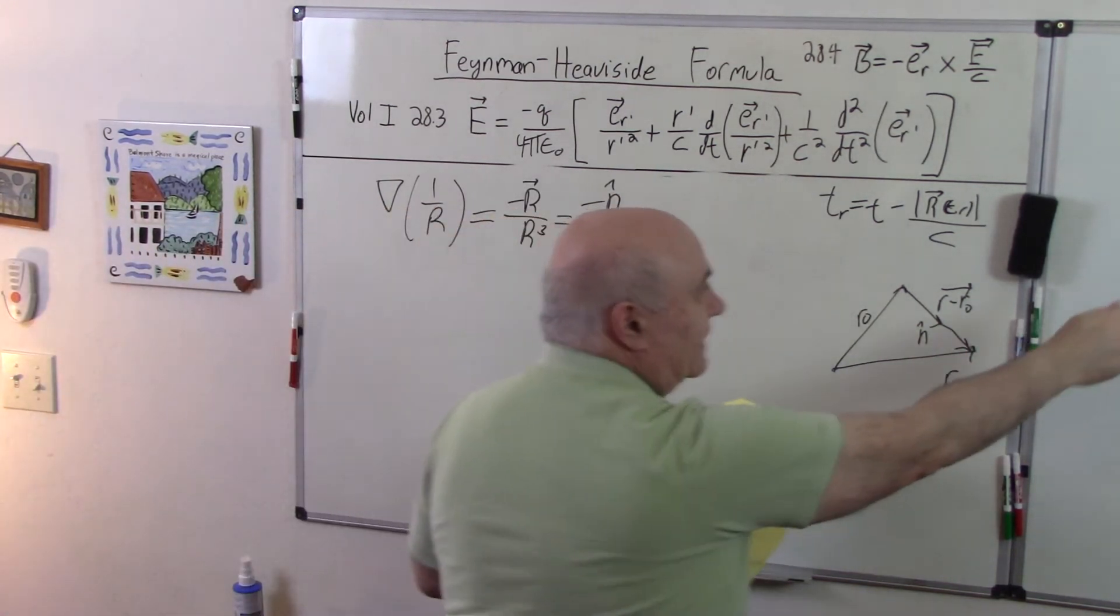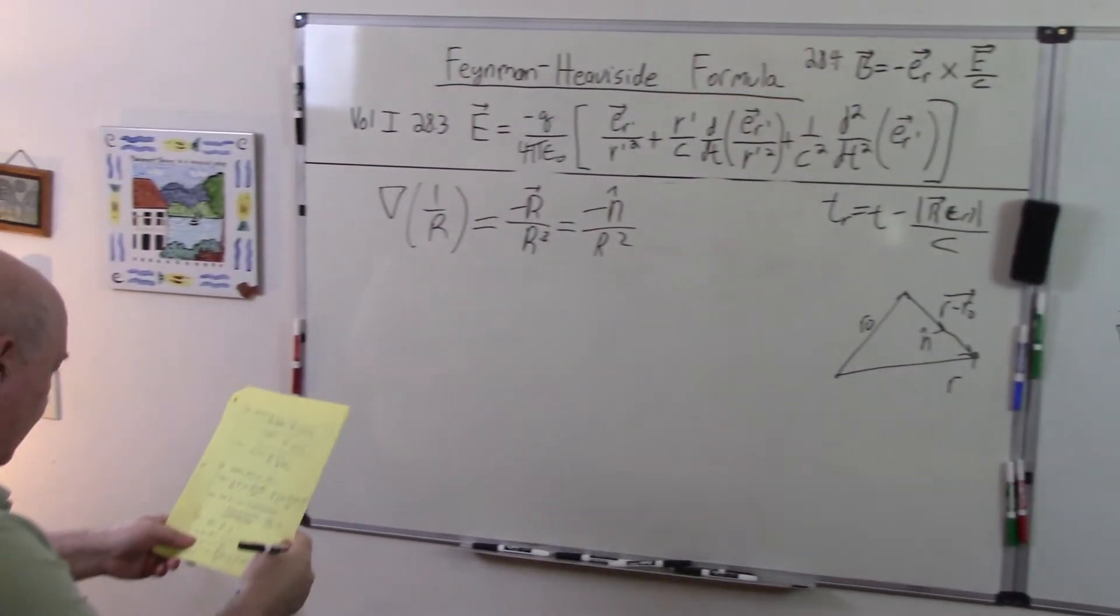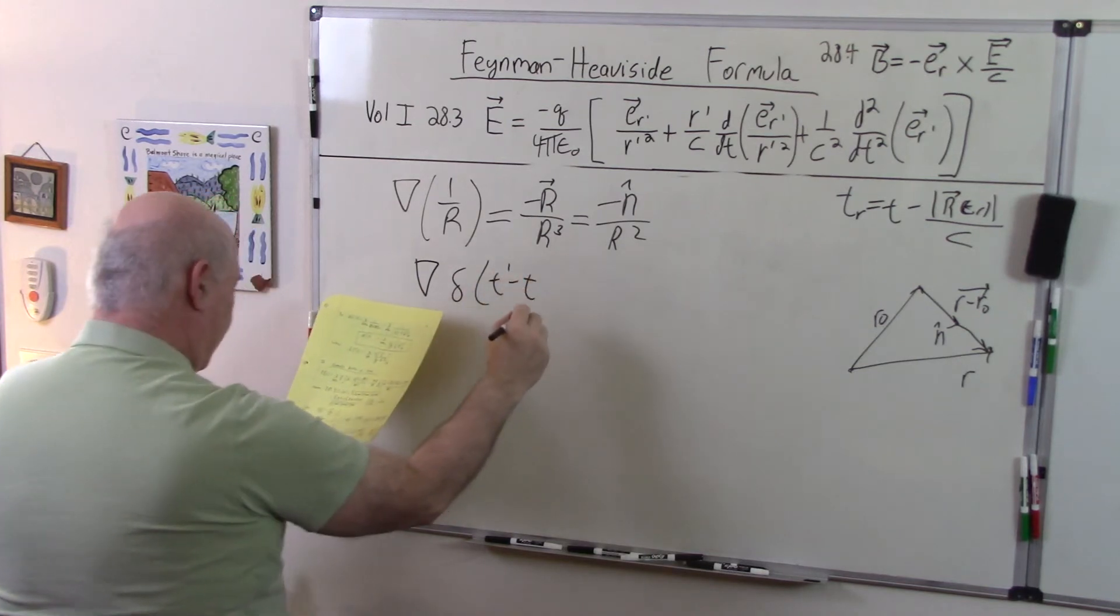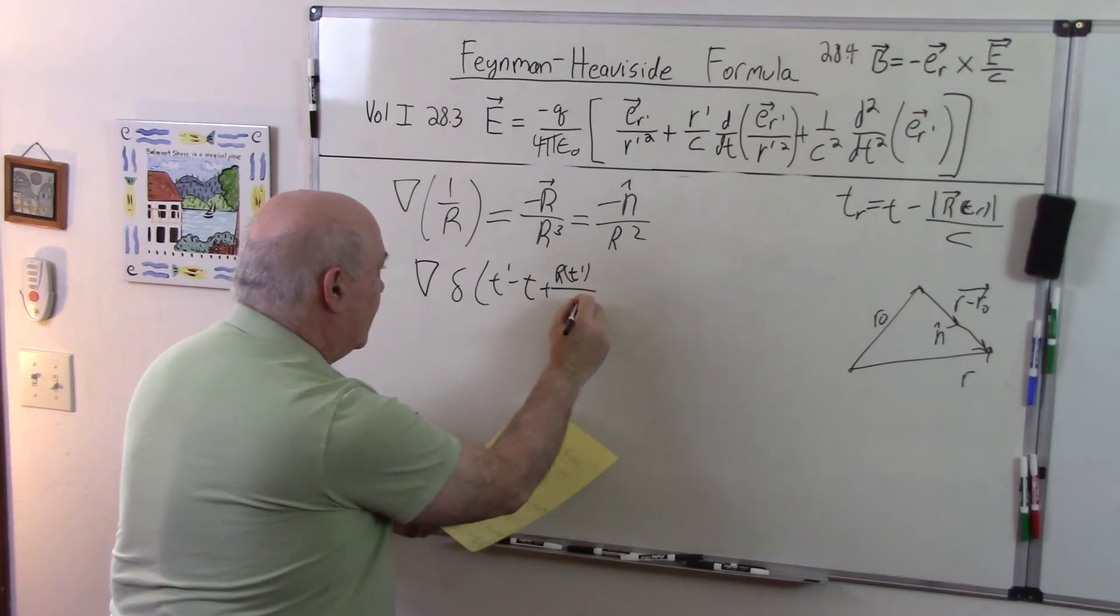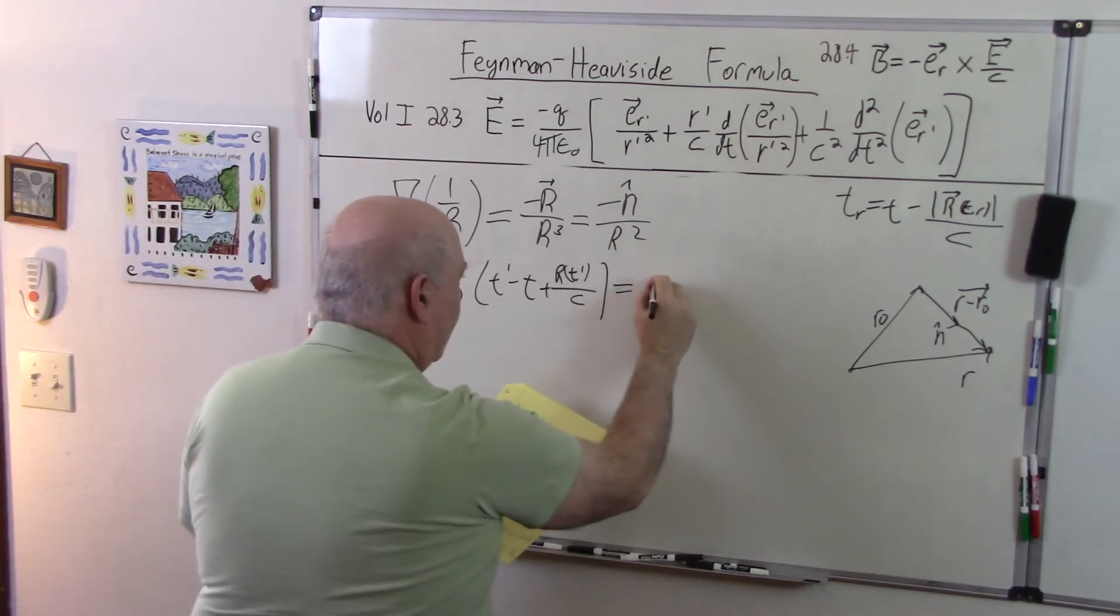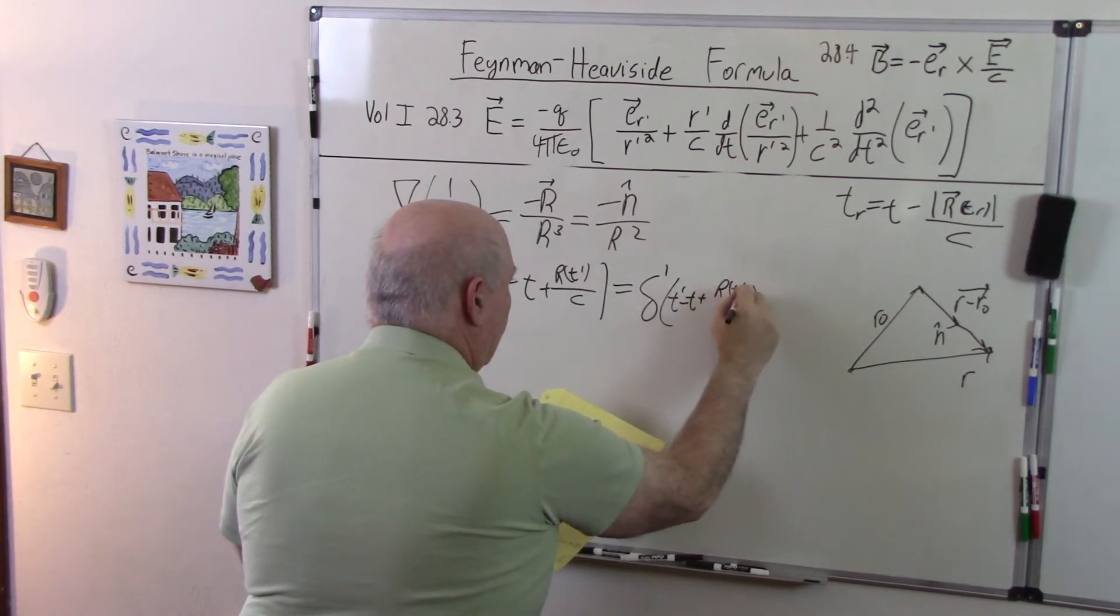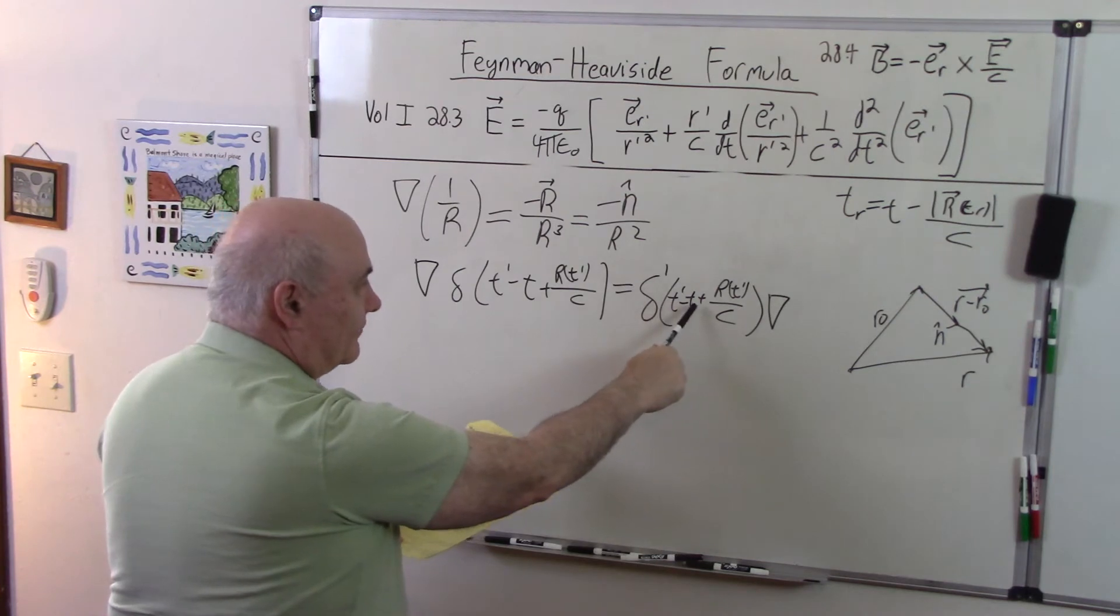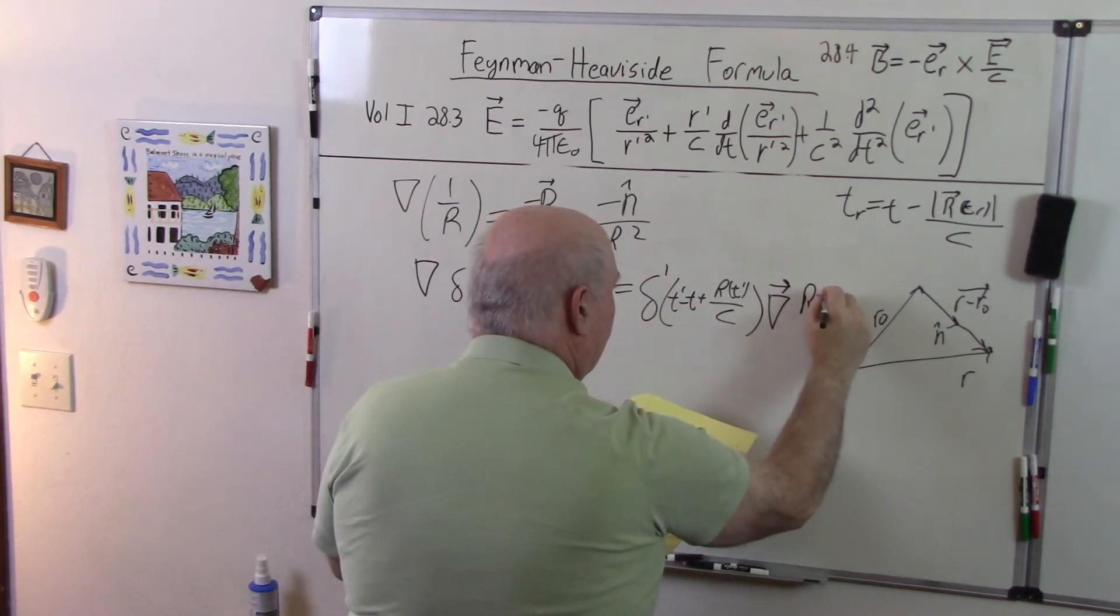So what we have to evaluate is the gradient of this delta function and the partial derivative of this whole thing here. So let's get started. The gradient of delta, this is the tricky part in the whole thing. At least it's done in the modern electrodynamics book by Zangwill. So first thing we do is we just take the derivative of the delta function with respect to its argument, which I'll denote as del prime. And then we multiply the gradient of this argument. This doesn't have any positional dependence, neither of these have any positional dependence.